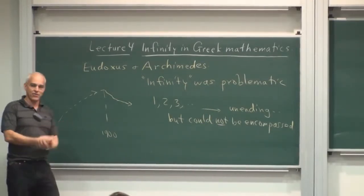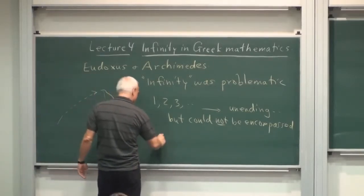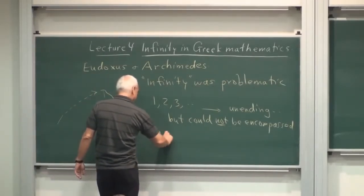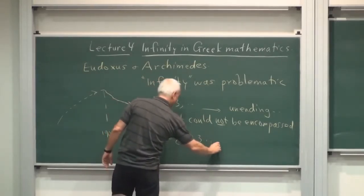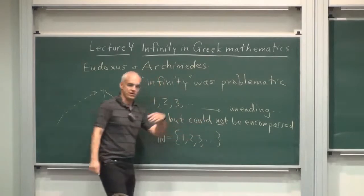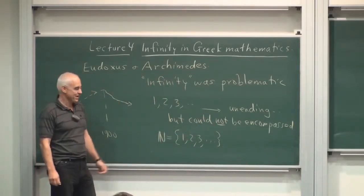These days, we don't have such scruples. These days, we just wave our hands, and we write things like N equals the set 1, 2, 3, dot, dot, dot, and we expect that this dot, dot, dot somehow encompasses all those numbers.